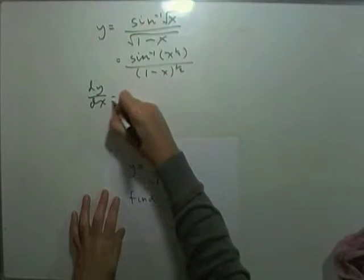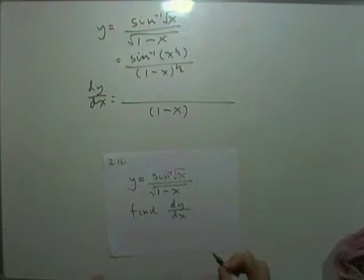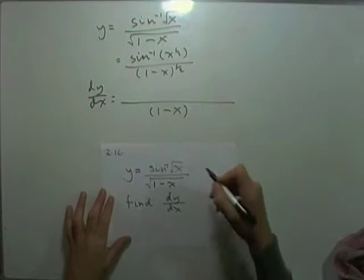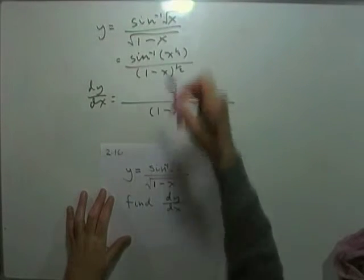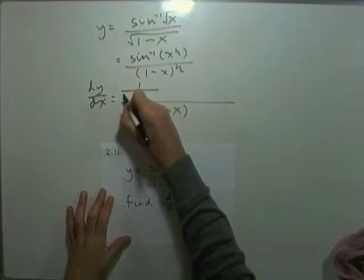So, differentiating it. So, square the bottom. Square the denominator just produces that term. And then, differentiating the top part would give you 1 over the square root.